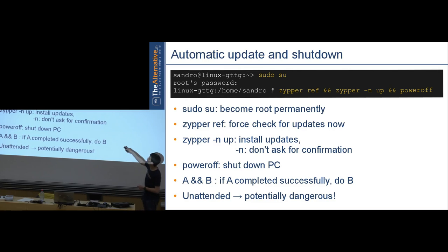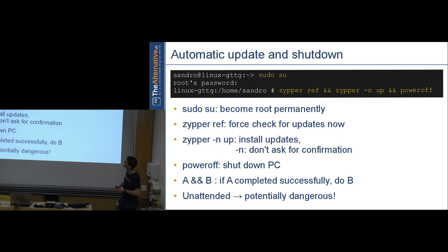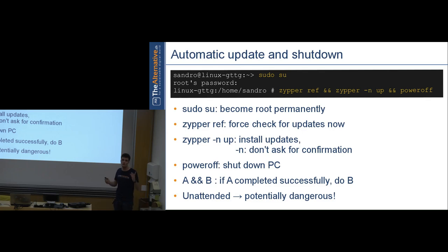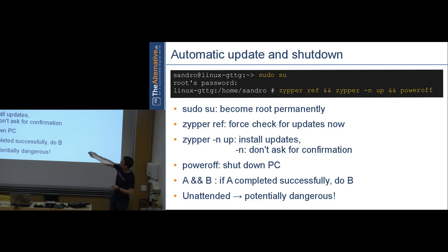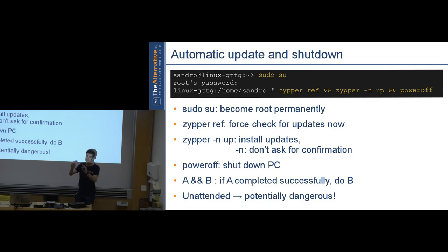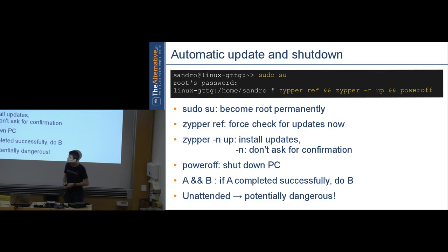First, become root permanently with 'sudo su' so sudo doesn't time out mid-process. Once you see the hashtag prompt, you're root. You can chain commands with a semicolon — run this then that regardless — or with '&&' (double ampersand), which checks the return value: if a command returns zero (success), it continues; if non-zero (failure), it stops.